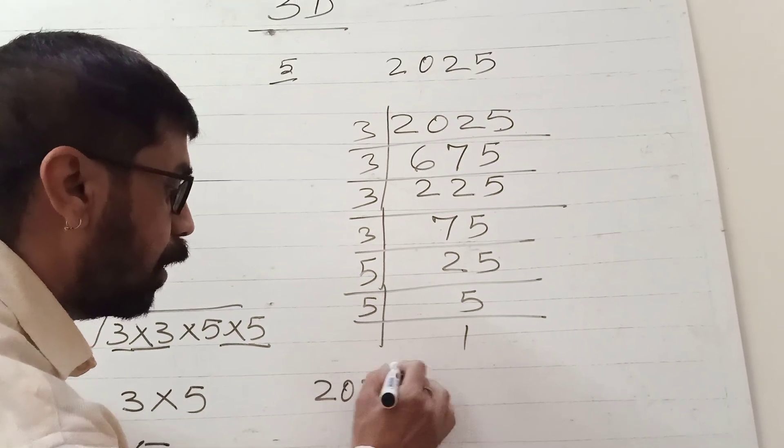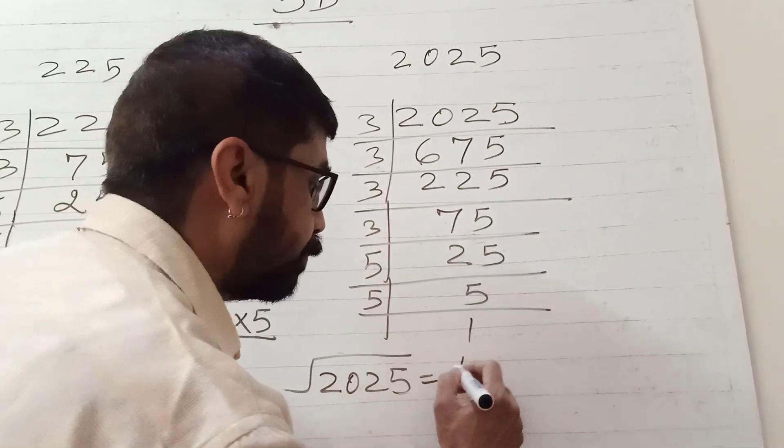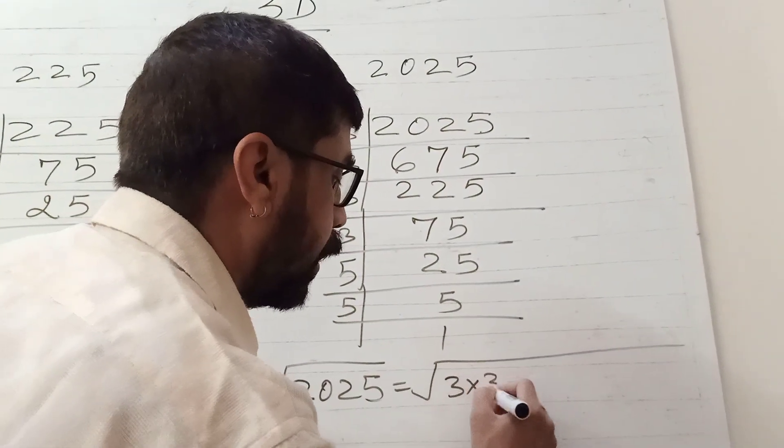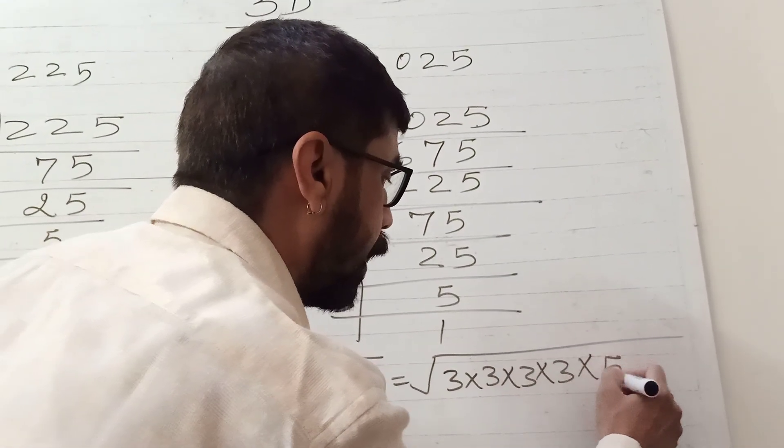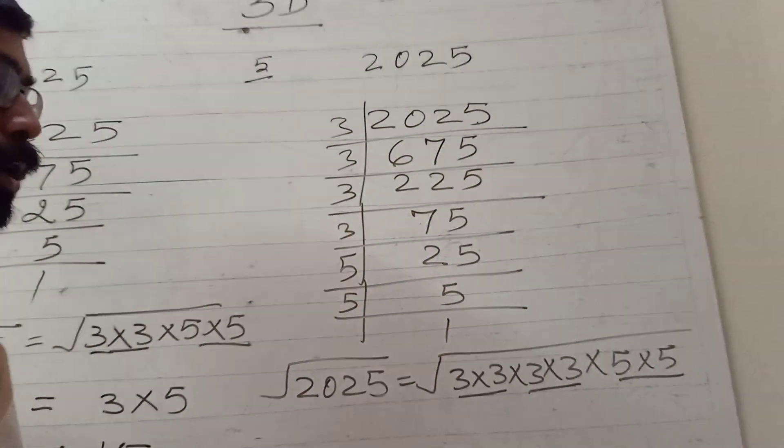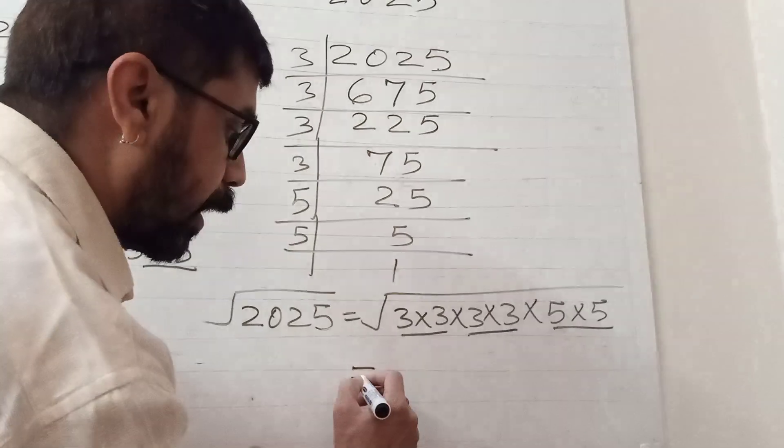Now 2025, its square root is 3 times 3 times 3 times 3 times 5 times 5. We will make pairs. The pair is complete from each pair. We will take out a single digit and we will remove this root sign.